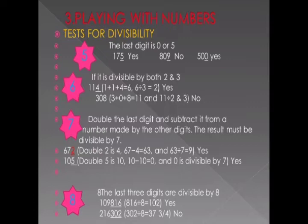For divisibility of 6, look at the example 114. To check divisibility by 2, look at the last digit — the last digit is 4, which is even, so it is divisible by 2. Now to check divisibility by 3, add the digits: 1 plus 1 plus 4 equals 6. Since 6 is divisible by 3, the number is divisible by both 2 and 3, so the whole number 114 is divisible by 6.